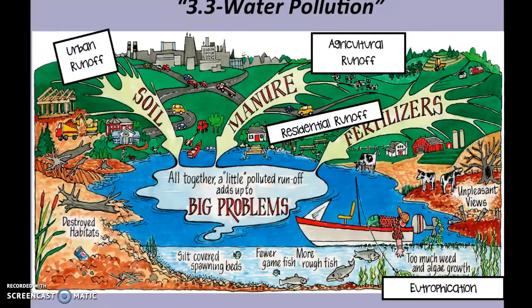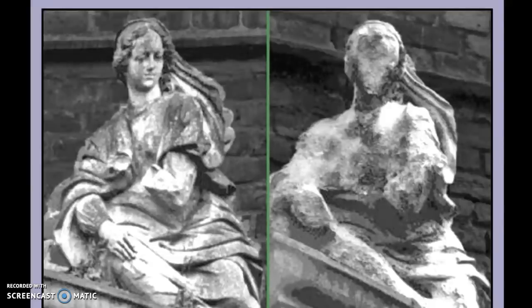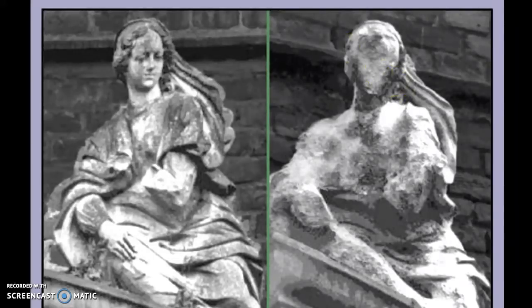So eutrophication can eventually take over a water source. Now look at our two pictures here — this is a before and an after picture. Think about the comparison between the two: what are some things you notice? What are things that are in common or different? Take a minute and write down a few things in your lab notebook.